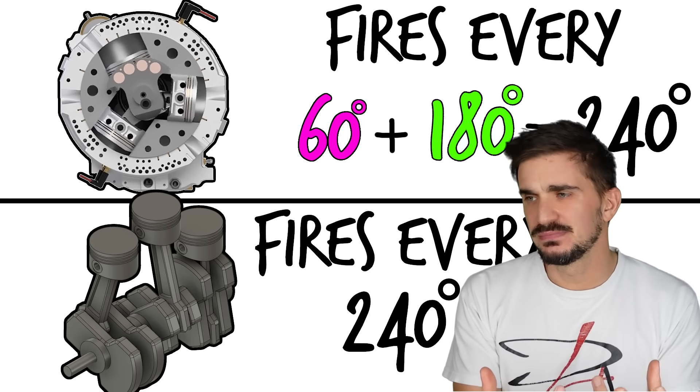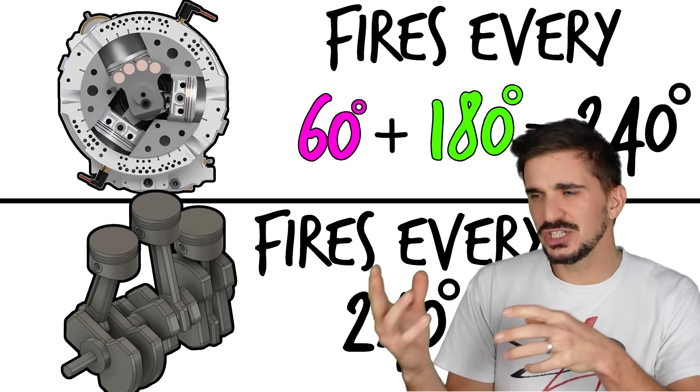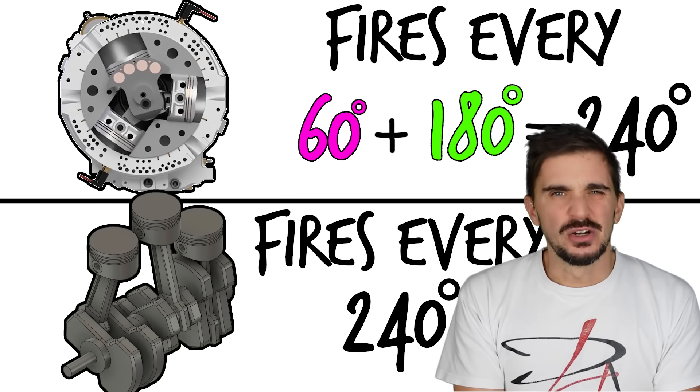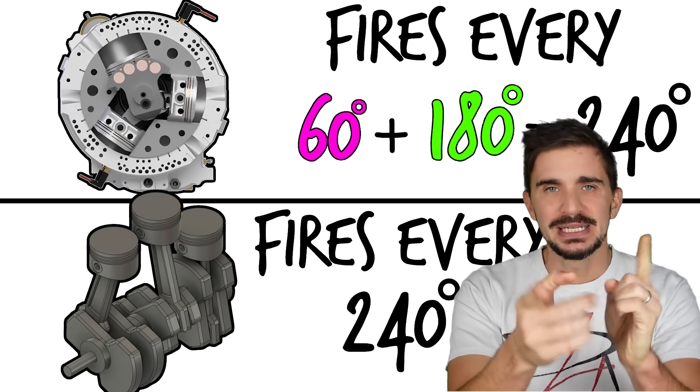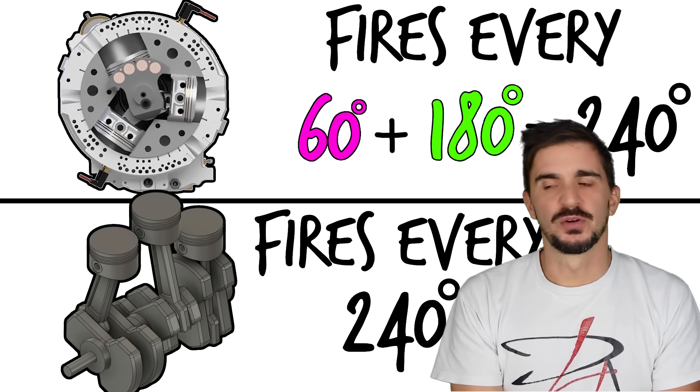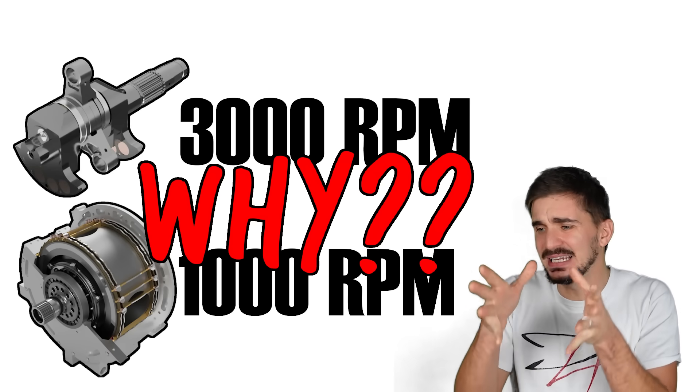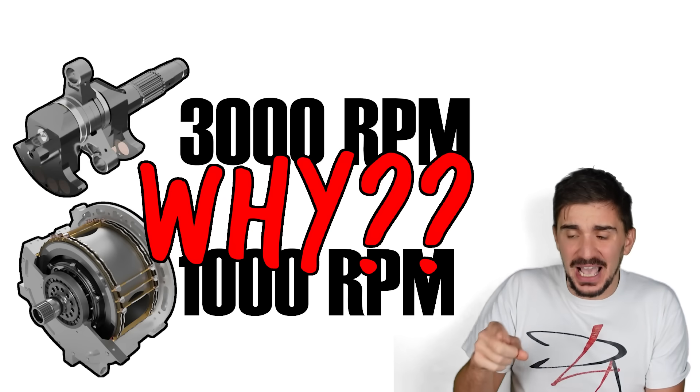The question is, do we count the block rotation or not? What's fair? Honestly, I don't know. So I'm going to leave that one up to you, in case you haven't fallen asleep or clicked away from this mind-numbing video. In case you're still watching, I'm sure you're wondering, why does the crank need to rotate three times faster than the block?